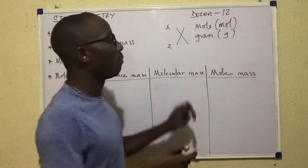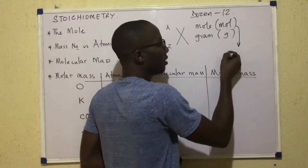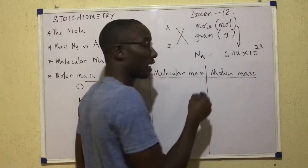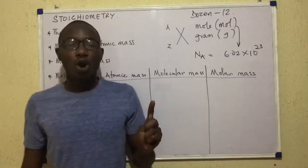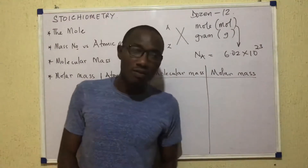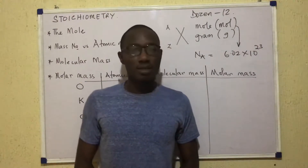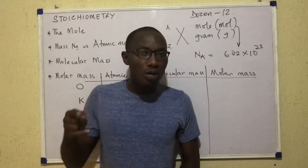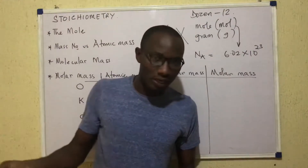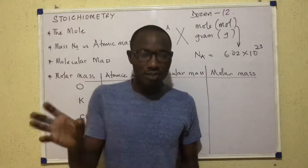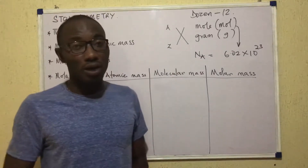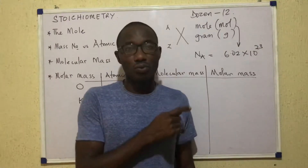So when we write mole, MOL, it refers to 6.02×10²³. One mole of sodium atoms would be 6.02×10²³ sodium atoms. One mole of oxygen molecules would be 6.02×10²³ oxygen molecules — molecules for molecules, atoms for atoms. It's just the word mole that changes to the number 6.02×10²³. That's the meaning of the word mole.